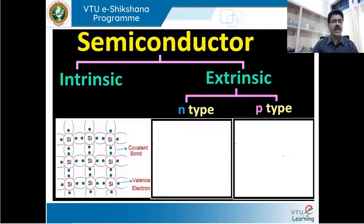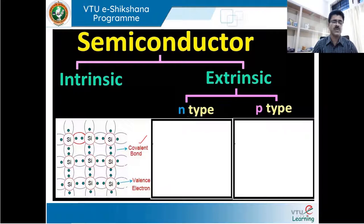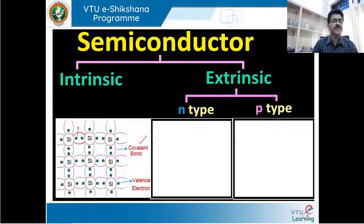Each electron of one atom bonds with the neighbouring electron of the neighbouring atom. Every silicon atom is surrounded by neighbouring silicon atoms. In its purest state, only silicon atoms are present with four valence electrons each, forming covalent bonds with neighbouring electrons. Covalent bonds are strong in nature, so these electrons cannot be freed at ordinary or very low temperatures. But when the temperature of the material is increased, bonds break and electrons are freed out, resulting in conductivity.